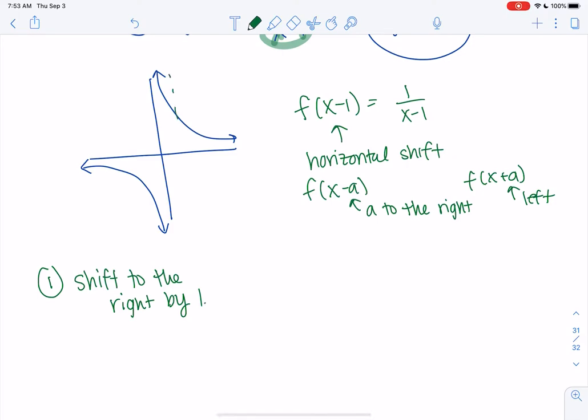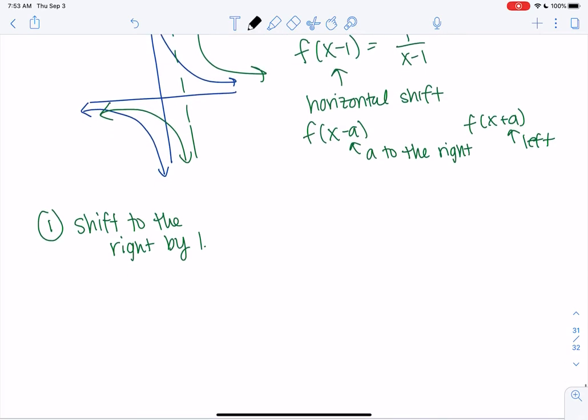So that just means the graph shifts over to the right by 1. So let's copy the function down again. I might rewrite it as negative 2 over x minus 1 and then plus 2, just kind of basically moving the 2 to the other side. It might look a little more familiar that way.